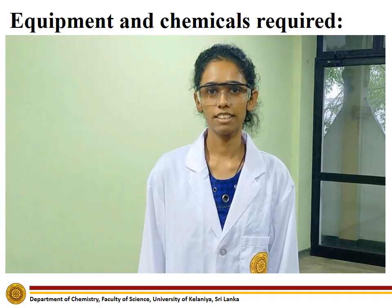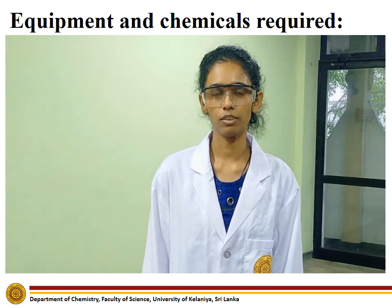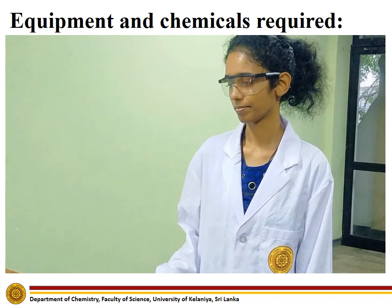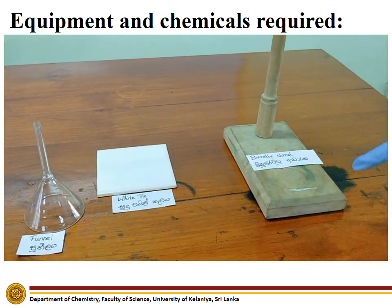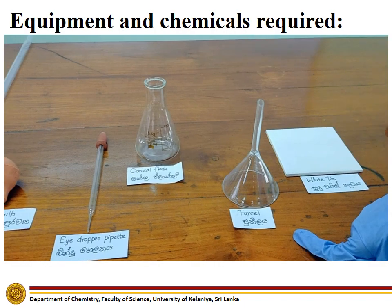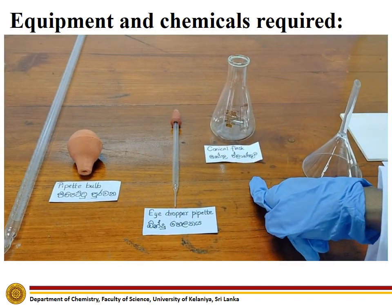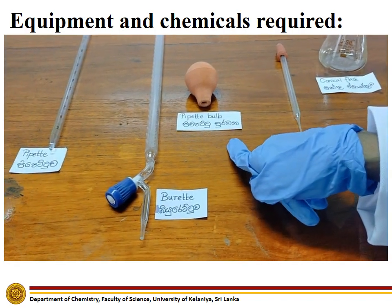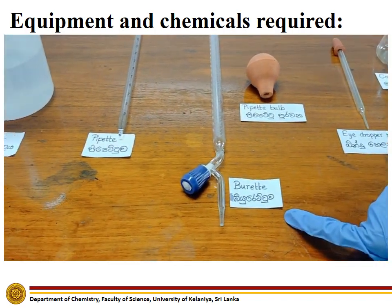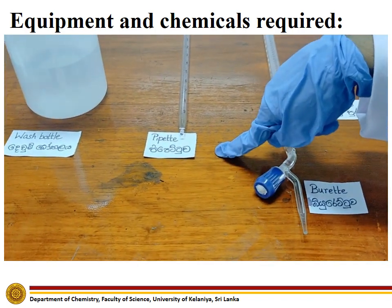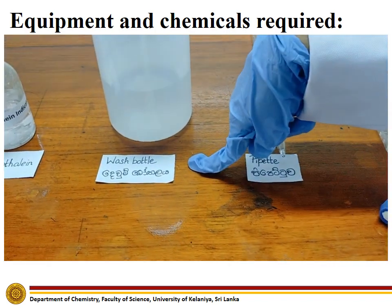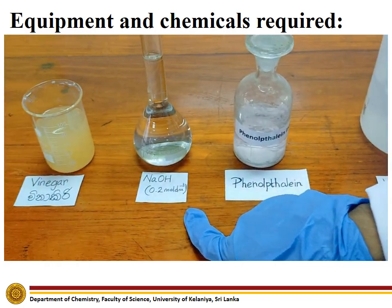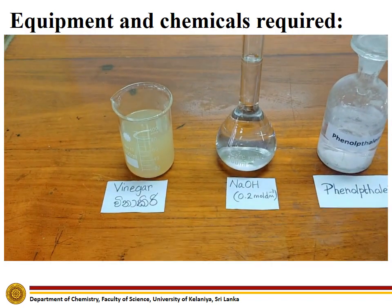The chemicals and equipment required to carry out this experiment are: burette stand, white tile, funnel, conical flask, eyedropper pipette, pipette bulb, burette, pipette, wash bottle with distilled water, phenolphthalein indicator, sodium hydroxide solution, and vinegar.